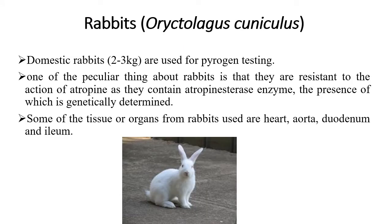First, we'll discuss the rabbit. The scientific name is Oryctolagus cuniculus. It is a domestic rabbit weighing around two to three kilograms. Cages are used for the pyrogen test. One peculiar thing about the rabbit is that they are resistant to the action of atropine, as they contain the enzyme atropine esterase, the presence of which is genetically determined.